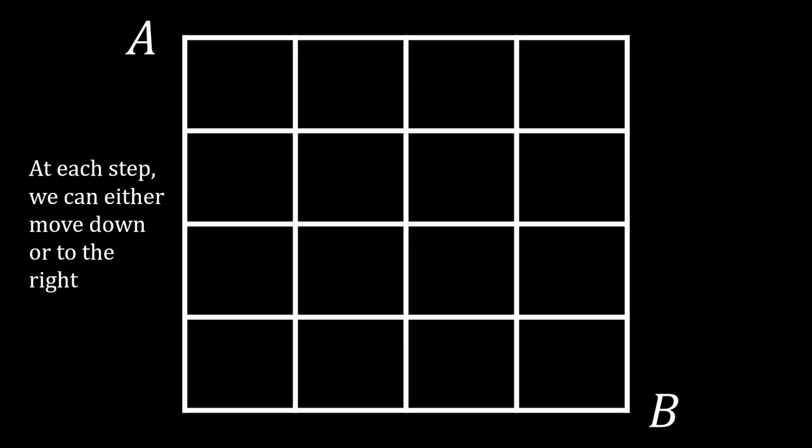One way to solve this problem is by considering the number of paths to another point that is closer to A, to simplify the problem, rather than just counting the number of paths to B.